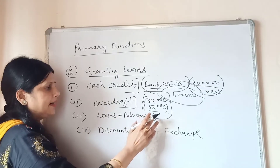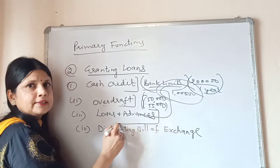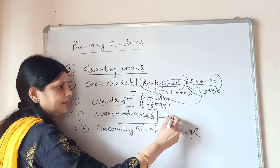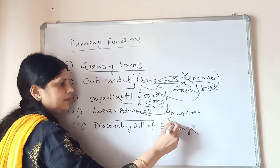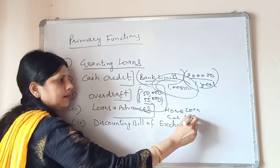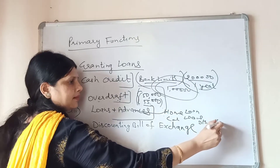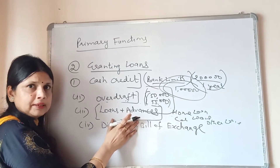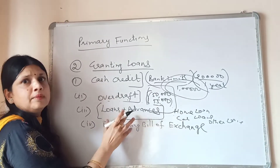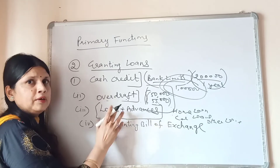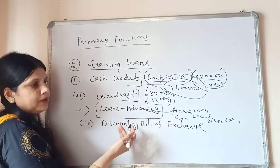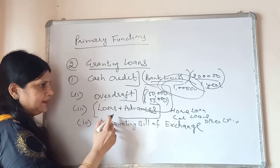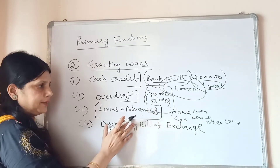The next form is loans and advances. The bank provides loans for short, medium, and long periods, including home loans, car loans, and other loans. To receive these loans, you must complete the bank's formalities and keep some securities against the loan. If you are unable to repay, the bank can use your securities to reimburse the amount.